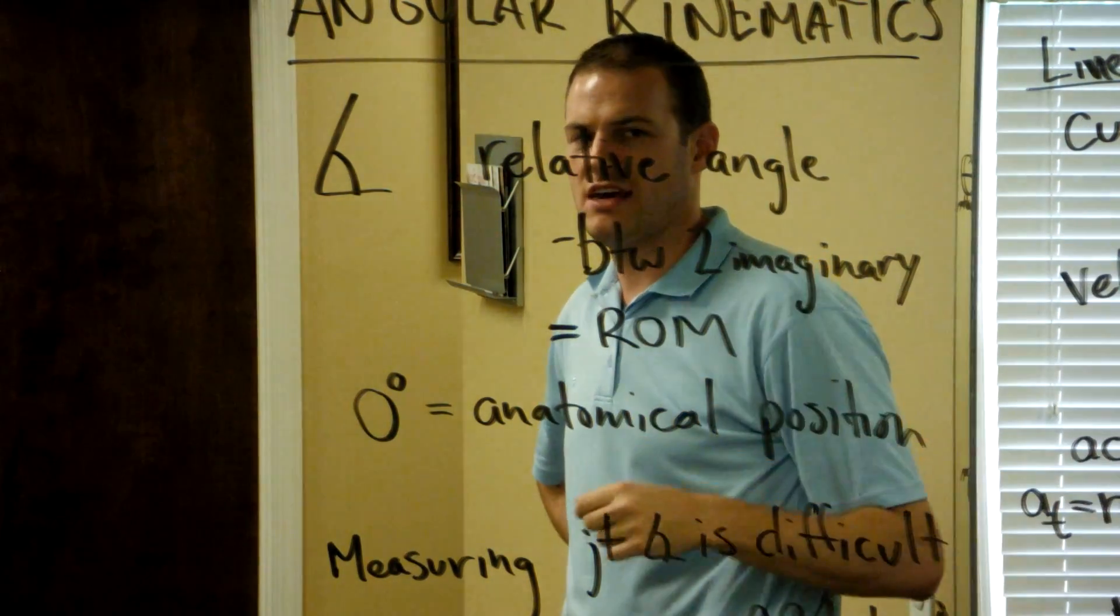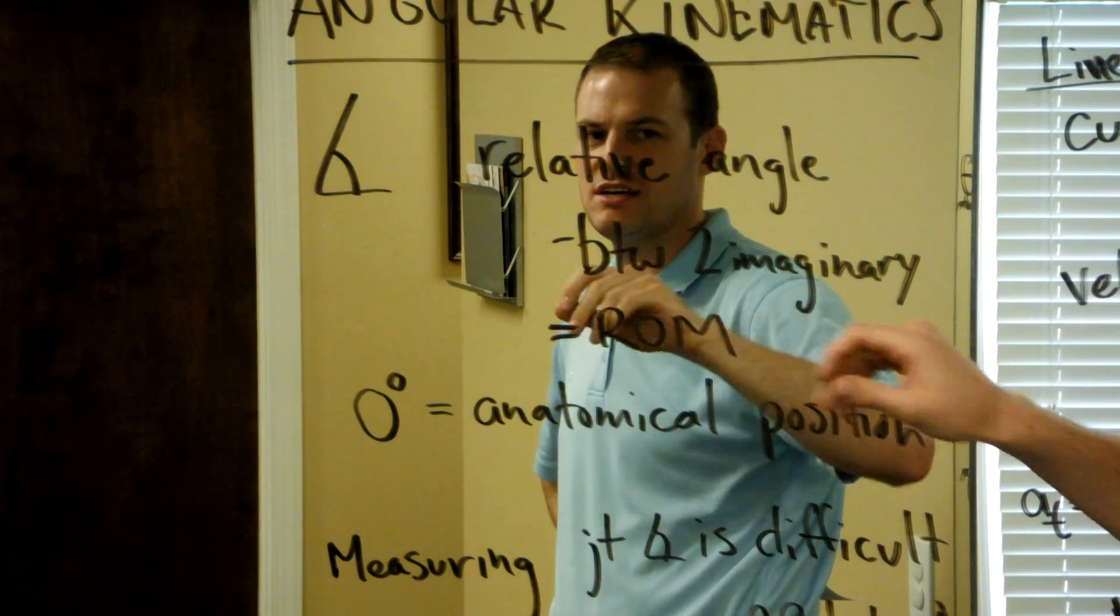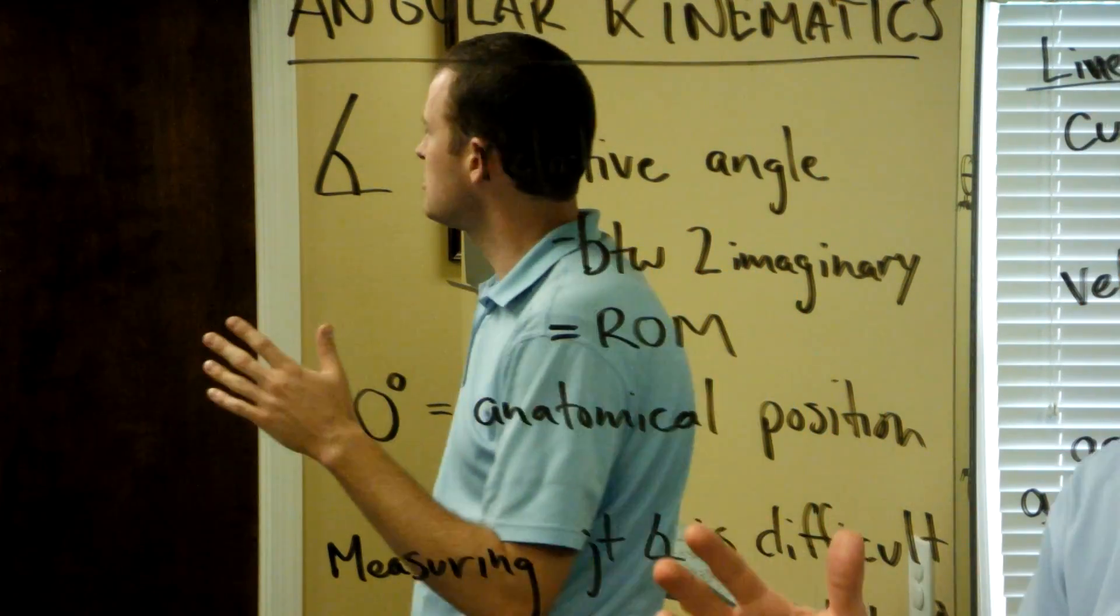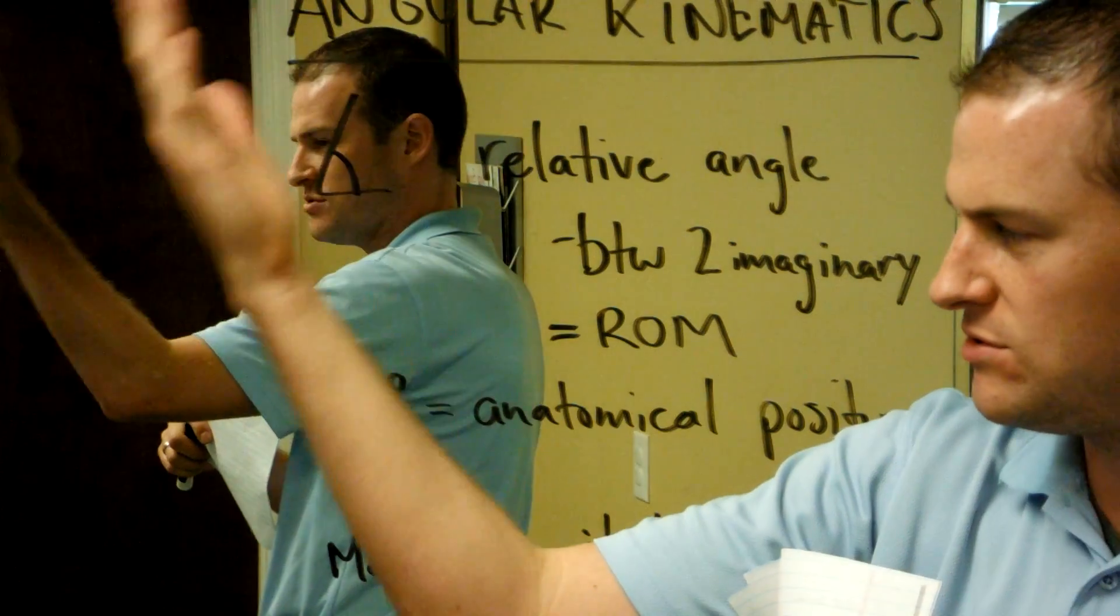What is called a relative angle. And this is how we talk about range of motion, or ROM, which is the change in angle between two imaginary lines.